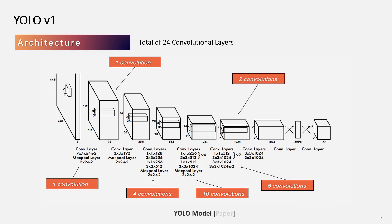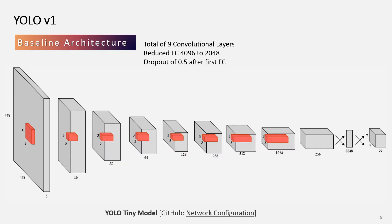YOLO has 24 convolutional layers, with alternating 1x1 convolutional layers to reduce the feature space from the preceding layer, followed by two fully connected layers to produce the final tensor. For my baseline, I chose the Tiny YOLO architecture due to time and resource constraints. The tiny architecture is composed of nine convolutional layers followed by two fully connected layers. I reduced the fully connected size from 4096 to 2048 to reduce the memory footprint.